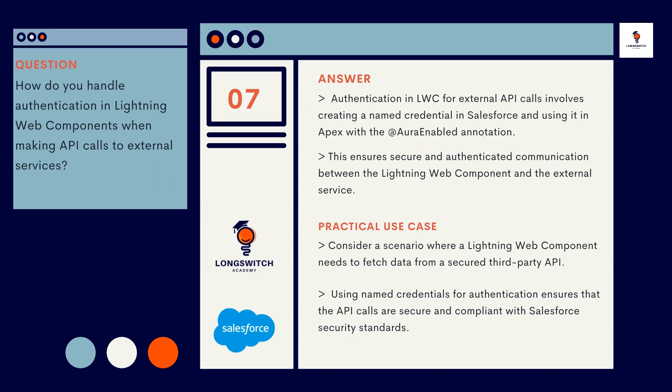Question number 7: How do you handle authentication in Lightning Web Components when making API calls to external services? Authentication in LWC for external API calls involves creating a named credential in Salesforce and using it in Apex with the @AuraEnabled annotation. This ensures secure and authenticated communication between the Lightning Web Component and the external service. For a practical use case, consider a scenario where a Lightning Web Component needs to fetch data from a secured third-party API — using named credentials for authentication ensures that the API calls are secure and compliant with Salesforce security standards.